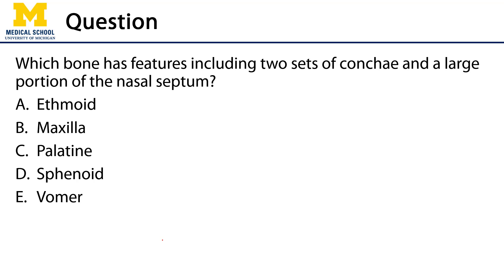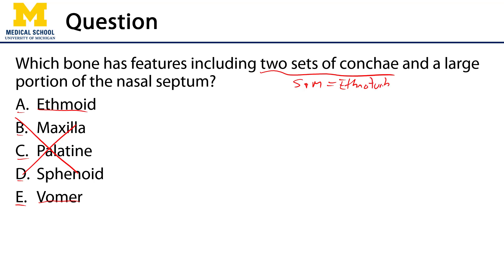The assessment question for this video is: which bone has features including two sets of conchae and a large portion of the nasal septum? Is it the ethmoid, the maxilla, the palatine, the sphenoid, or the vomer? The three parts of the nasal septum are the septal cartilage, the vomer, and the ethmoid — so we can eliminate the other three. And when we think of the two sets of conchae, the superior and middle conchae are known as the ethmoturbinates. So the correct answer is A, the ethmoid. Thank you very much for your time.